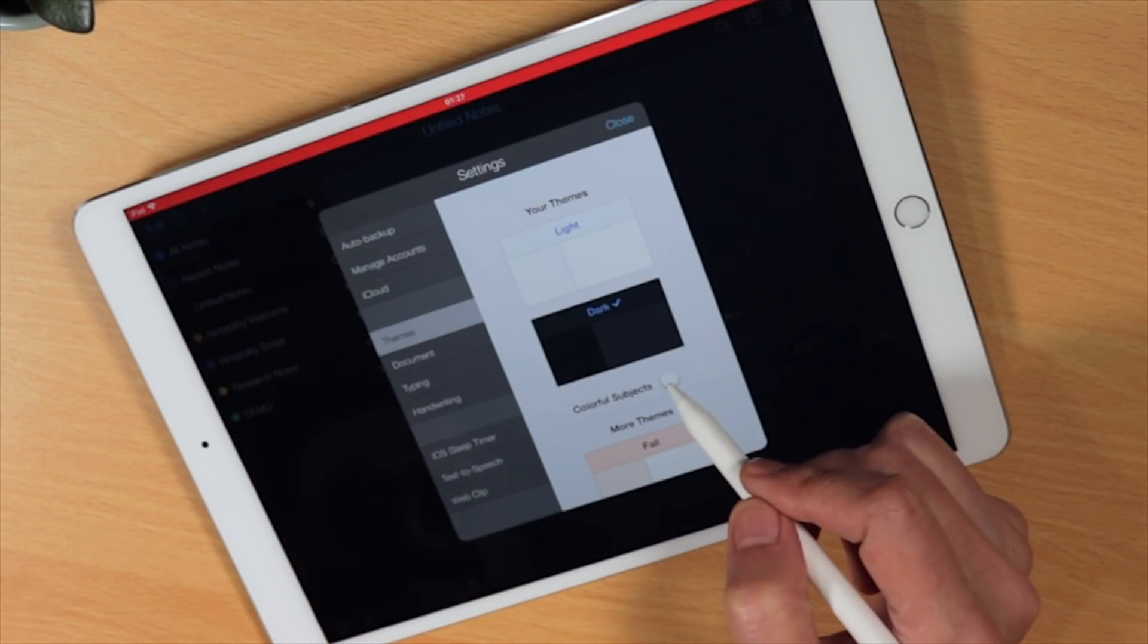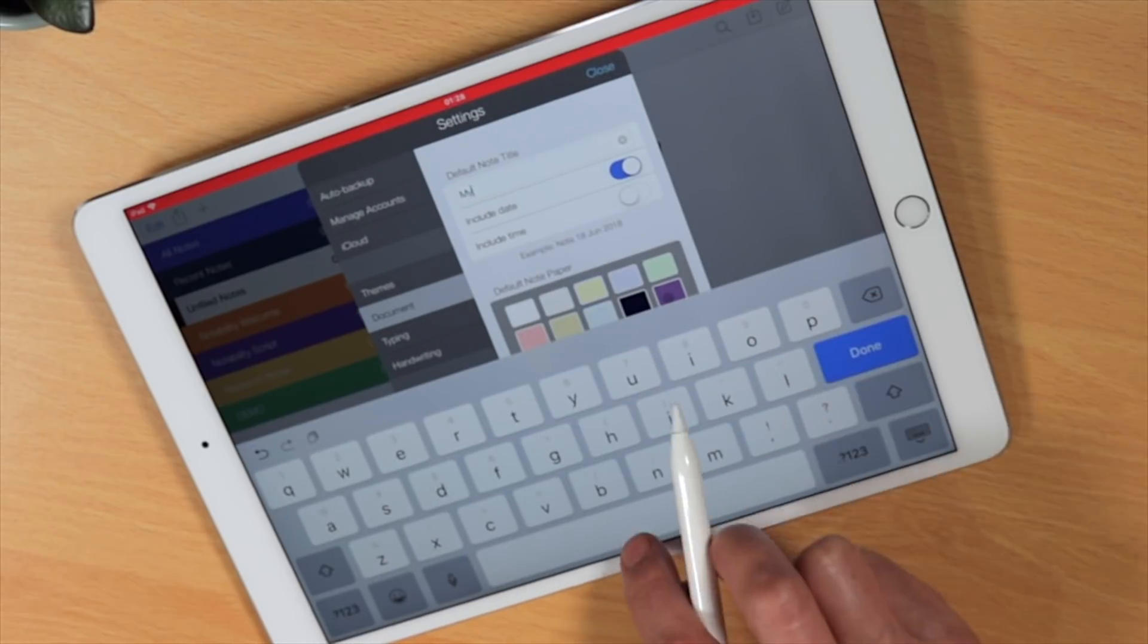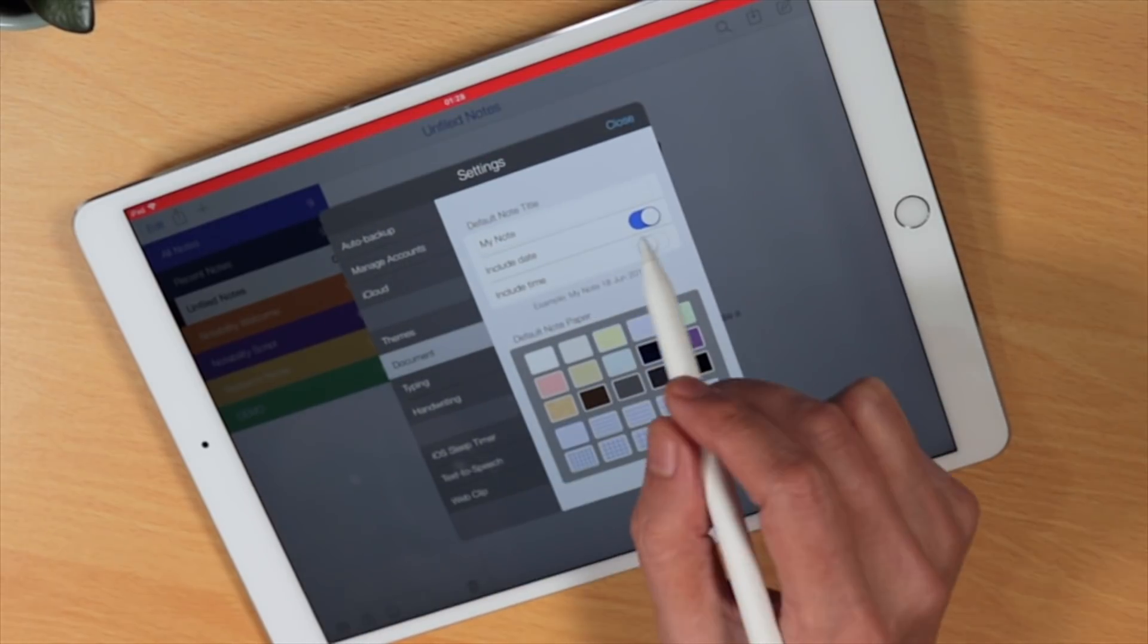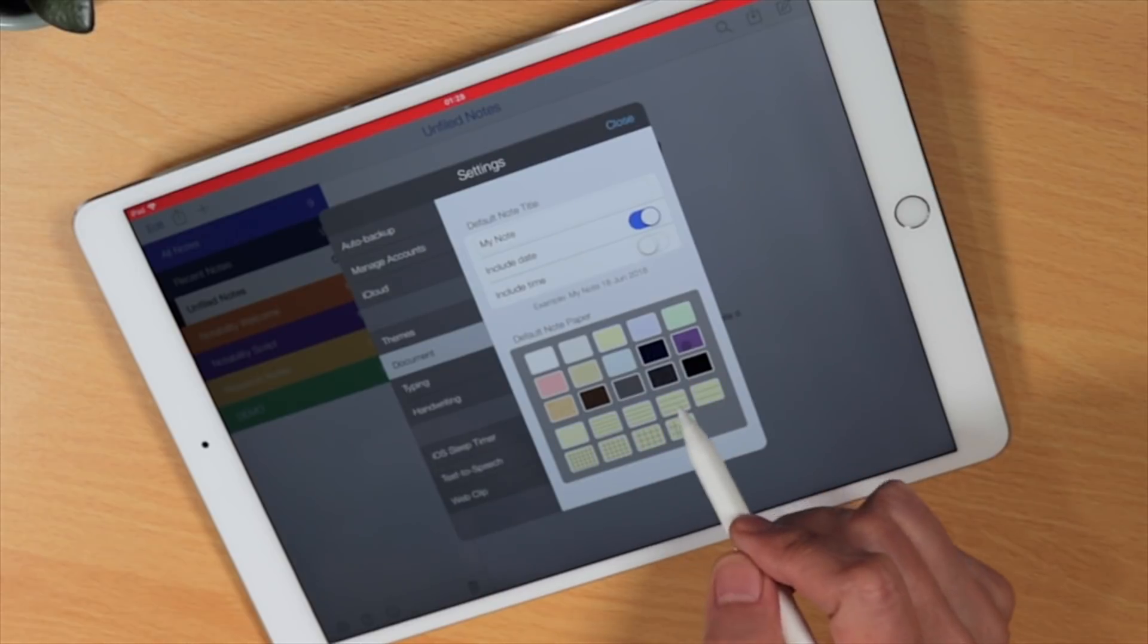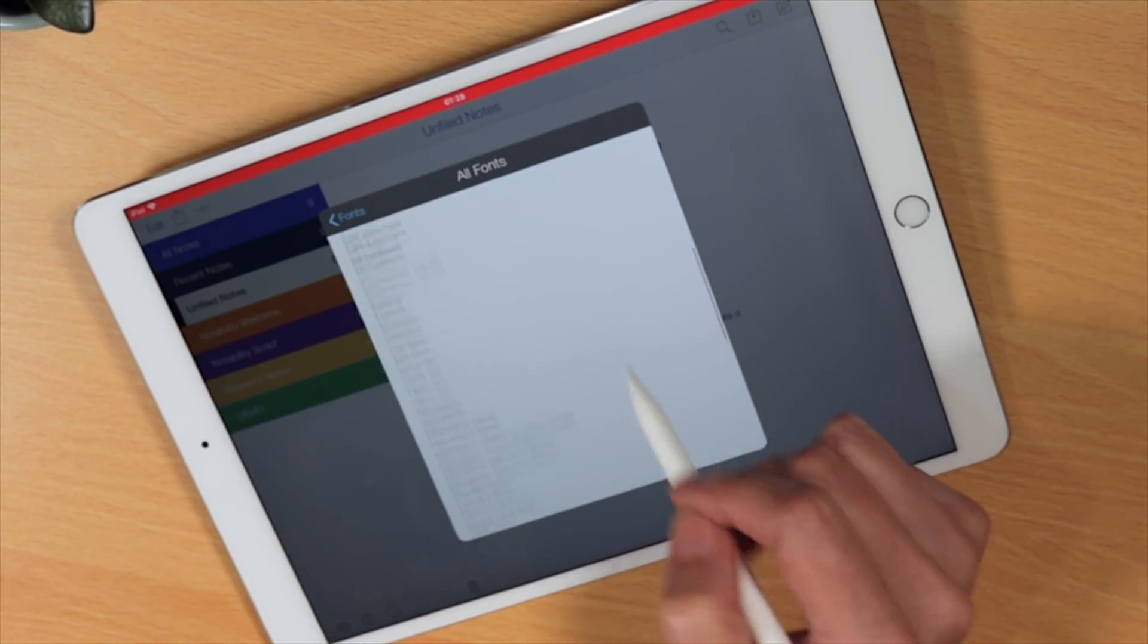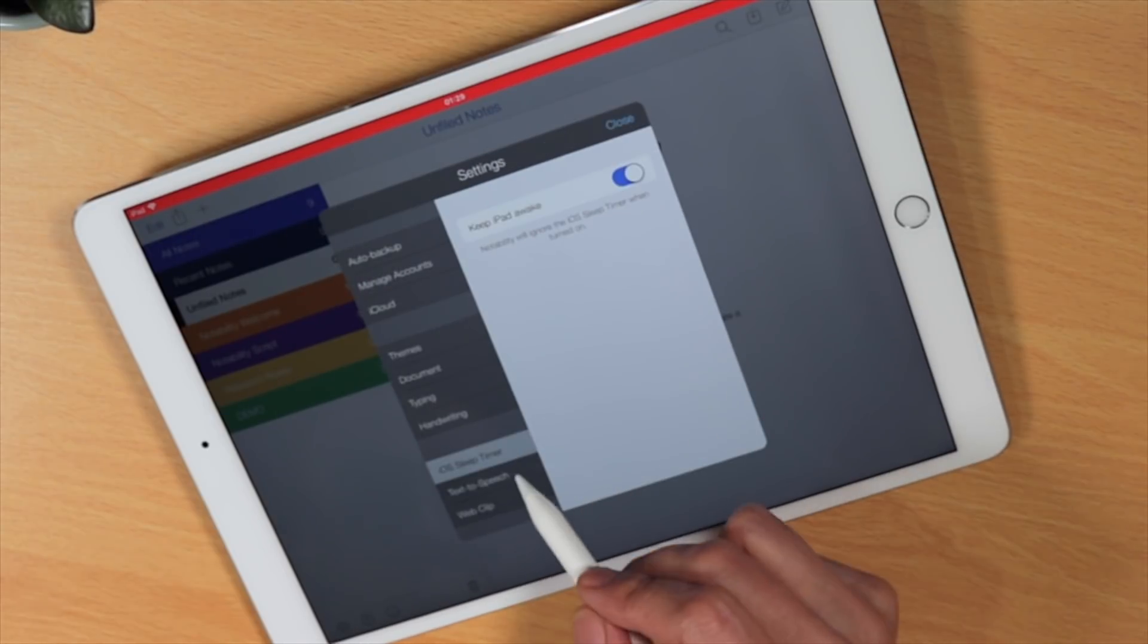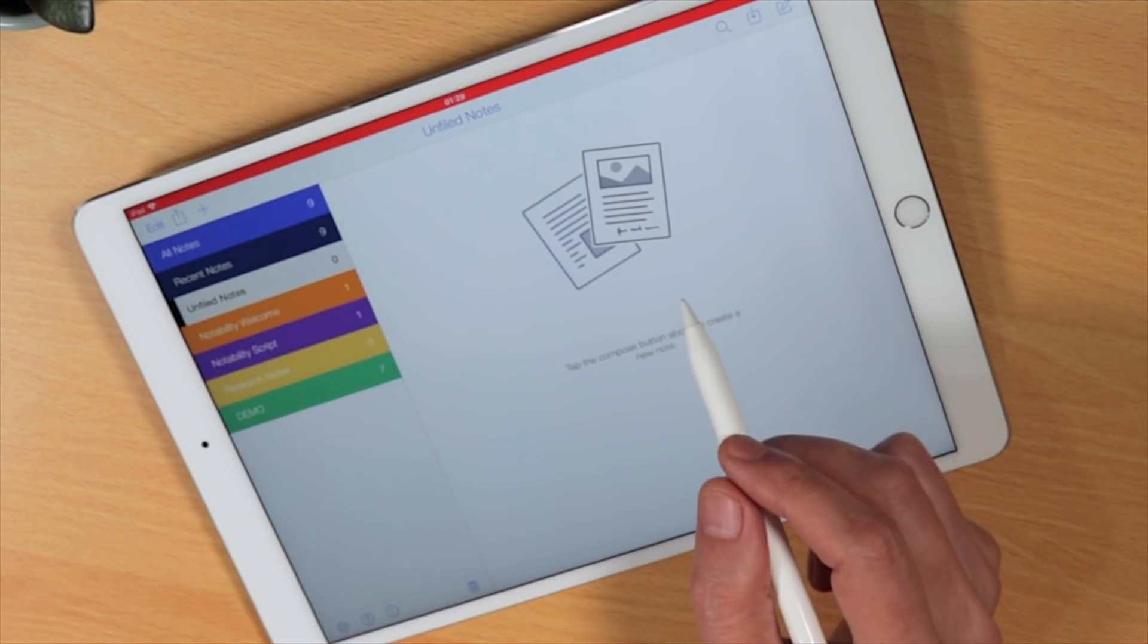Now, tap on Themes to change the overall look and appearance of the Notability interface. To change the default note title and color of paper, tap on Document. And to change the default typing format, tap on Typing. The rest of the settings are pretty self-explanatory. Simply tap Close to Continue.